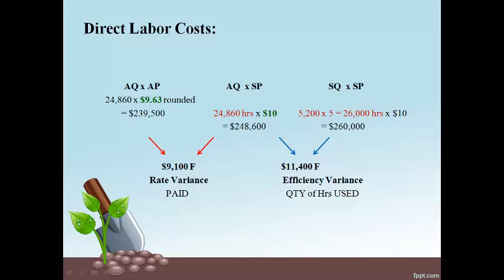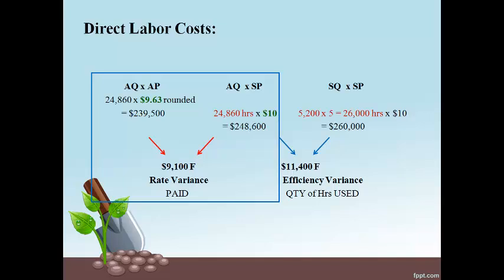Let's analyze why the actual direct labor cost of $239,500 is less than the $260,000 expected. The quantity here is labor hours. A difference of $9,100 resulted because the actual rate per hour paid to employees is $9.63, which is lower than the $10.00 expected. The savings of $0.37 per hour increases profits, so the variance is favorable.